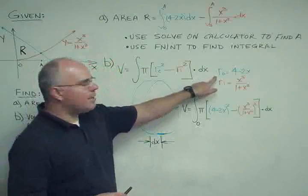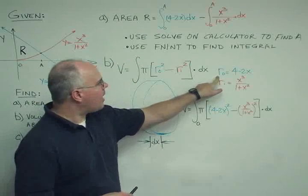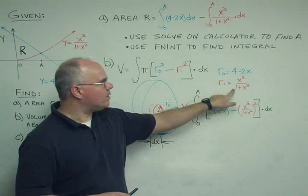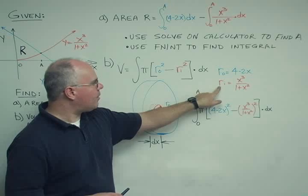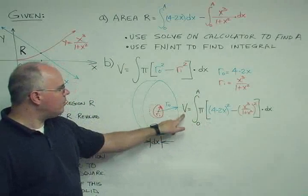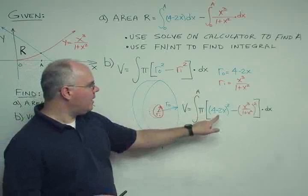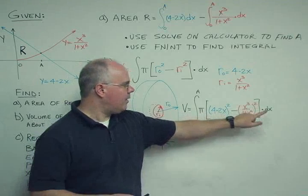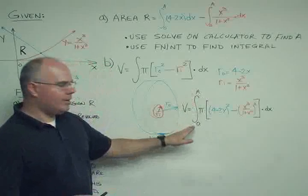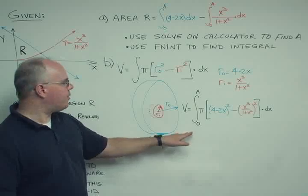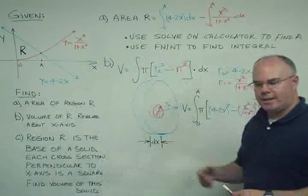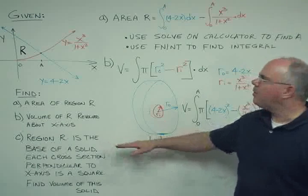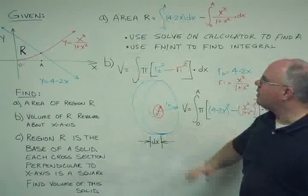My outer radius is my blue curve, 4 minus 2x. My inner radius is the red curve, x cubed divided by 1 plus x squared. So the volume integrated between 0 and A of pi times 4 minus 2x quantity squared minus x cubed divided by 1 plus x squared quantity squared, all times dx. If I evaluate this integral, I would get a numerical answer for the volume using the Texas Instruments TI-83 allowed on our AP exam.